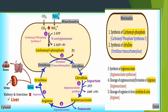The fourth step of the urea cycle is the cleavage of arginosuccinate. Arginosuccinate is cleaved to form arginine and fumarate. This step is catalyzed by the enzyme arginosuccinase. The fumarate produced links the urea cycle to the TCA cycle, which will be discussed in a later video.